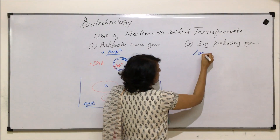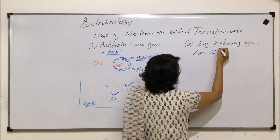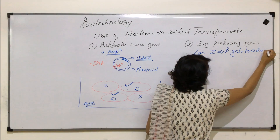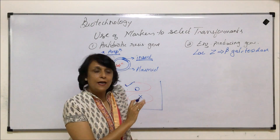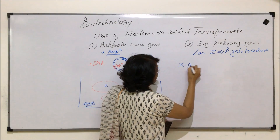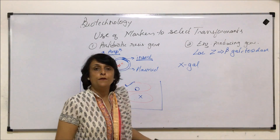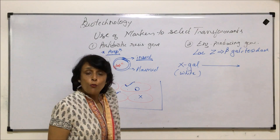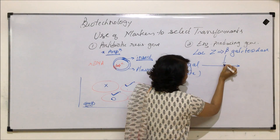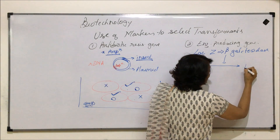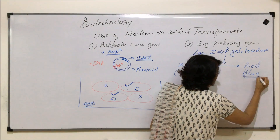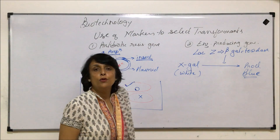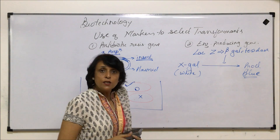The second method is by using an enzyme-producing gene. The gene most commonly used is the LAGZ gene, which produces the enzyme beta-galactosidase. There is a substance called X-gal, which is a modified version of galactose. This X-gal is a white-colored substance. When it is broken down by beta-galactosidase, the product obtained is a dark blue color. So X-gal is white, and in the presence of beta-galactosidase it breaks down to produce a dark blue colored product.